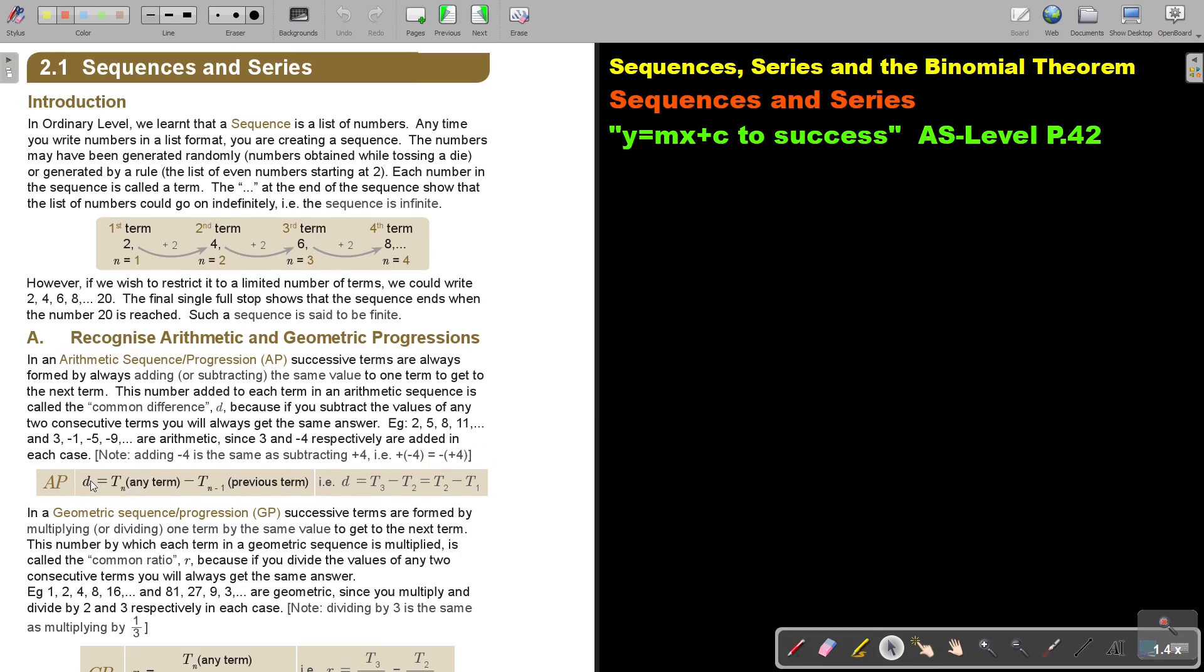So, AP. D, how do you get D, the common difference? You take any term and you subtract the previous, the one in front of it. So, you take the front one and you subtract the back one. So, T3 minus T2 or T2 minus T1.